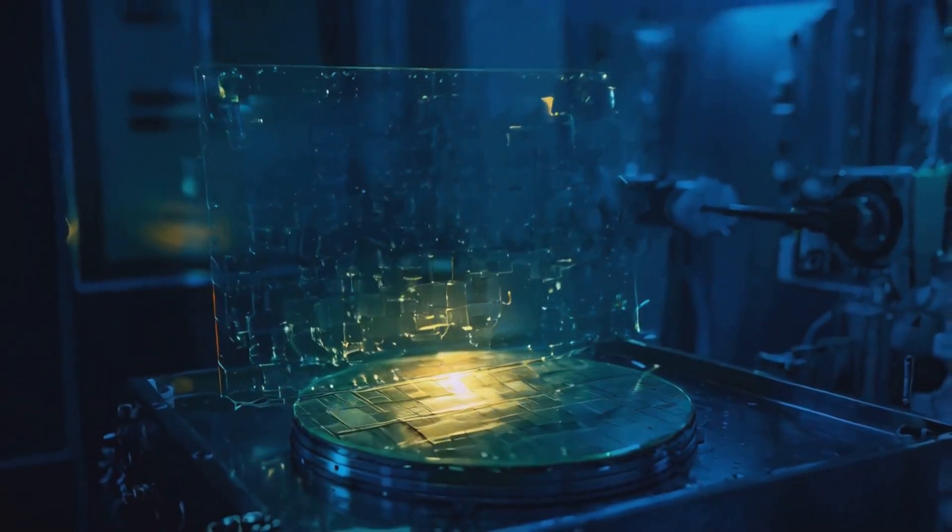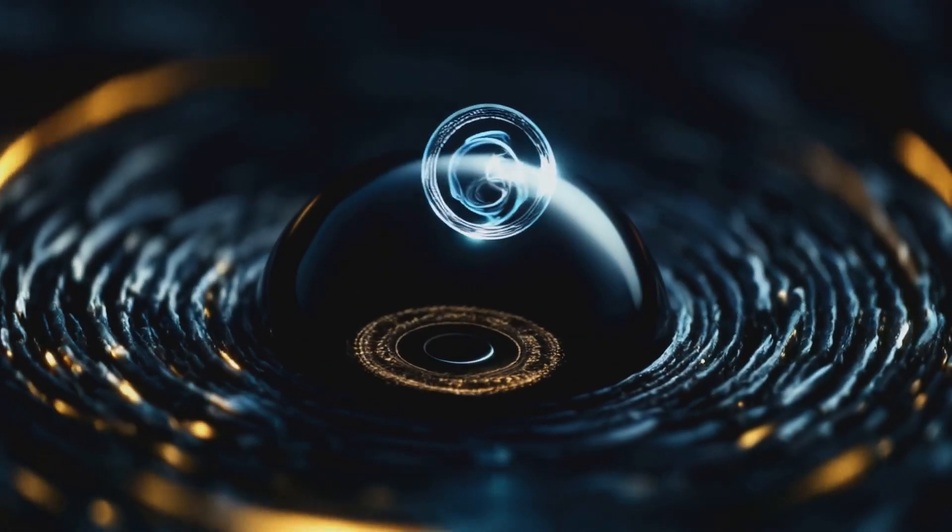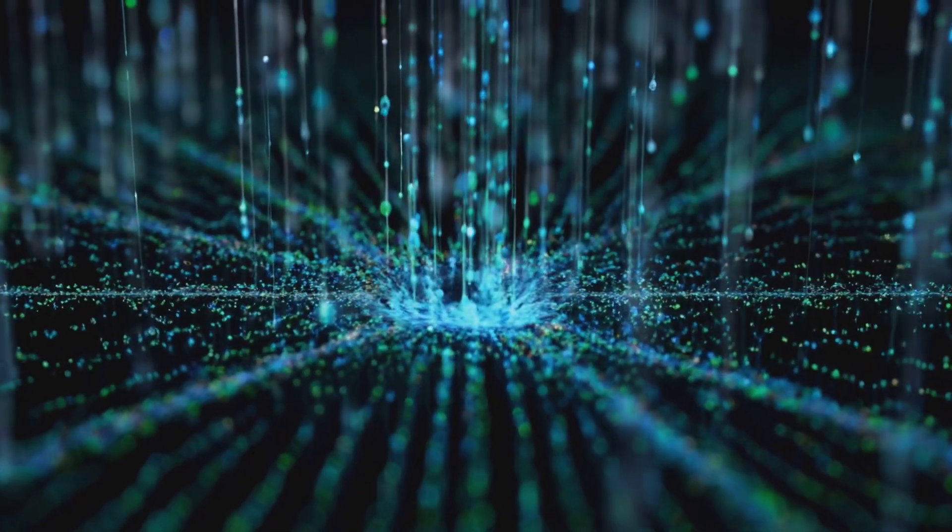A photomask guides ultraviolet light, carving micro-scale circuits into metal. It's a process where light and shadow create complex codes, translating into the technology we use every day.